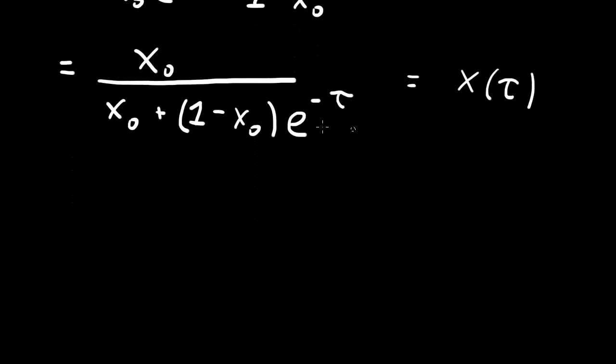When τ is 0, this is 1, so it's x₀ over x₀ plus (1 minus x₀), which is just x₀. That's the initial condition. And when τ goes to infinity, the exponential decays to 0, and x(τ) goes to x₀ over x₀, which is 1.